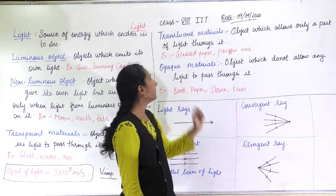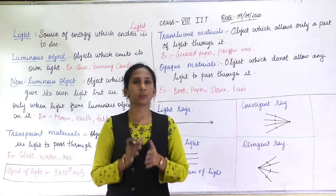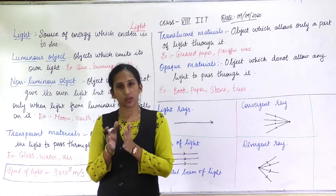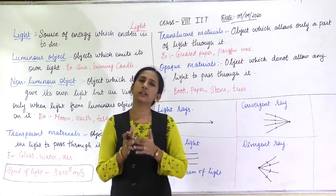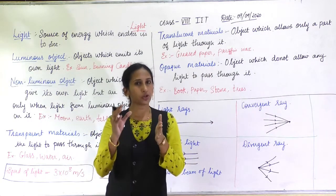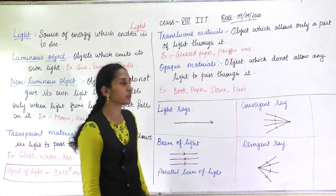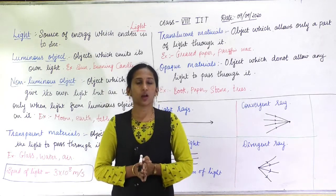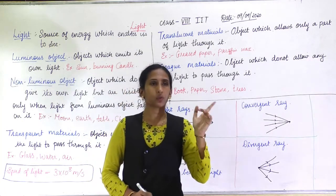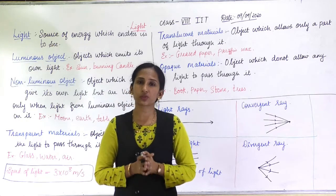The second type is translucent material. A translucent material allows only a partial amount of light to pass through it — some light passes through and some reflects back. For example, tracing paper and wax. The frosted glass windows fitted in houses are also translucent — you cannot see through them clearly, but you can see the outline or shadow of someone moving behind them.